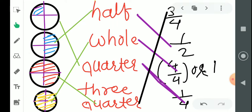This is a circle divided into four equal parts. One part is colored. The colored part represents one by four, or 1/4.